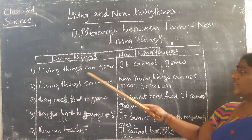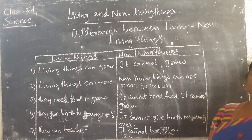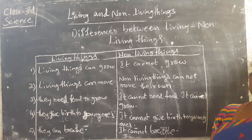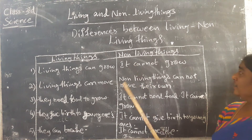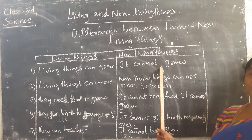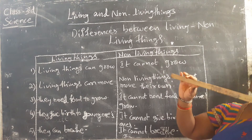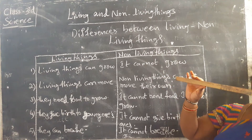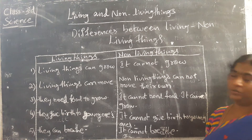Living things can grow — we know that they can grow gradually: daily, monthly, yearly. But non-living things cannot grow. Will the stick grow? No. Will the bench grow? No.